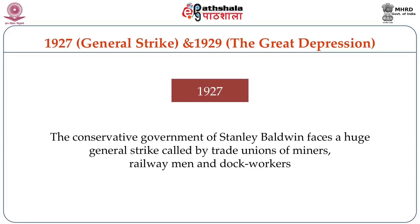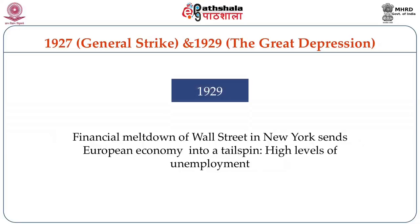In 1926, the Conservative government of Stanley Baldwin faced a huge general strike called by trade unions of miners, railwaymen and dock workers. In 1929, financial meltdown of Wall Street in New York sent the European economy into a tailspin, and high levels of unemployment were a vexing problem witnessed during that time.